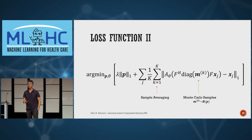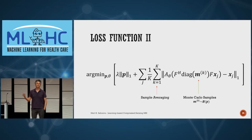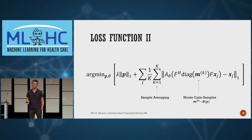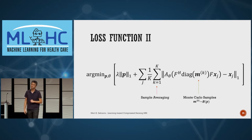We actually sample just one mask per step, not many. That might sound crazy, but because of stochastic gradient descent, sampling a single mask still gives a very noisy but unbiased gradient estimate, which is sufficient for optimization. There's also a reparameterization trick involved. Everything is implemented in Keras.